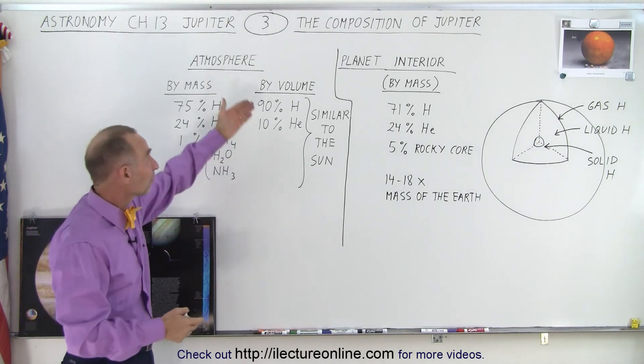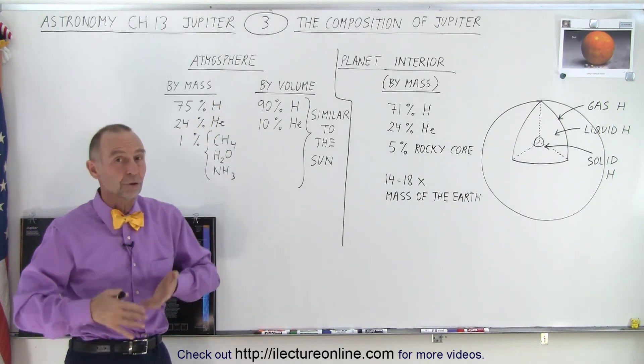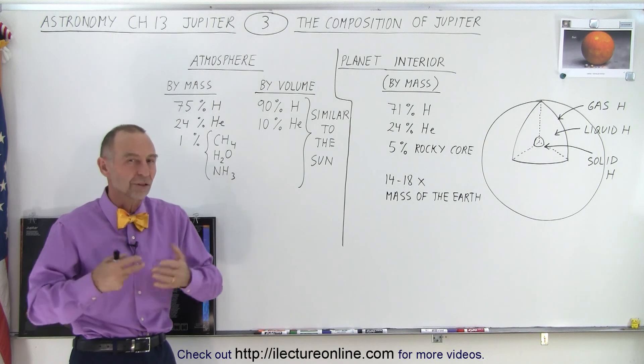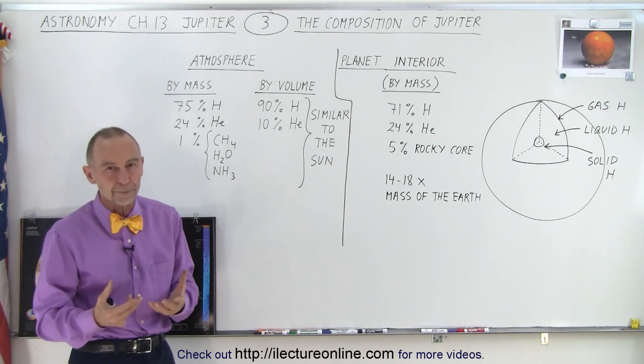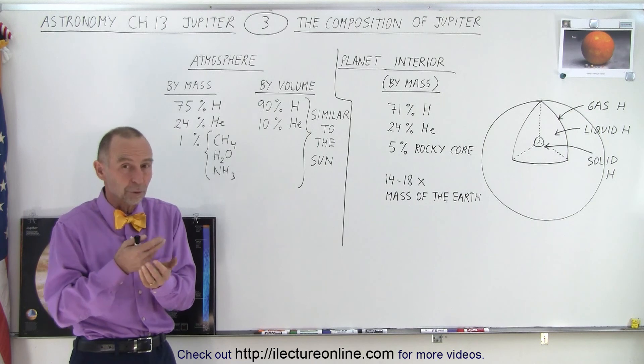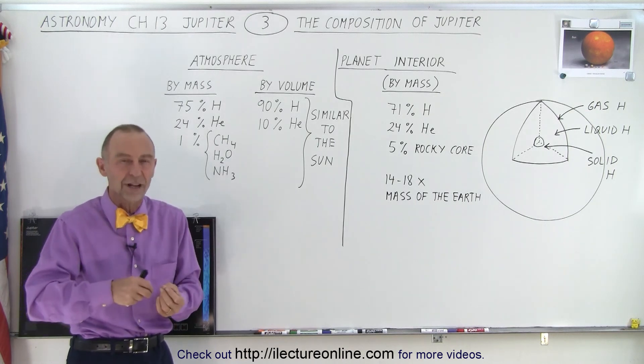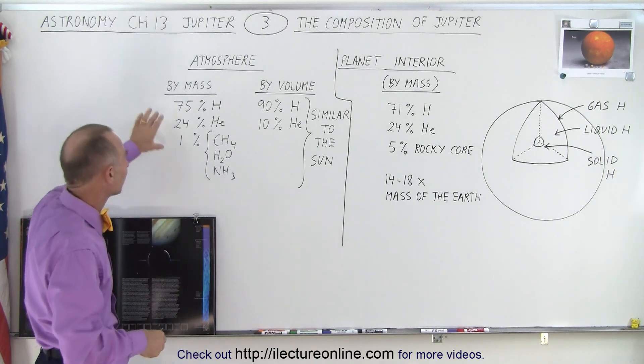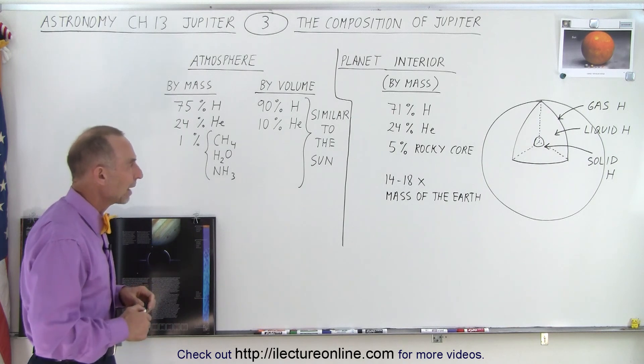If we look at it by volume, we get the same numbers. For the sun, it's about 90% hydrogen, 10% helium by volume, because every helium atom is four times as massive as a hydrogen atom. But typically we think of it in terms of by mass.